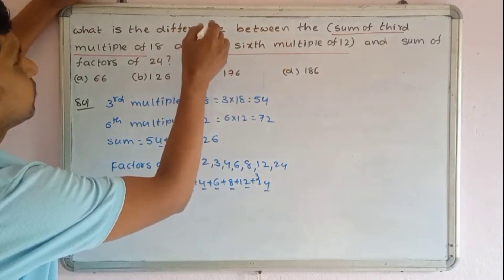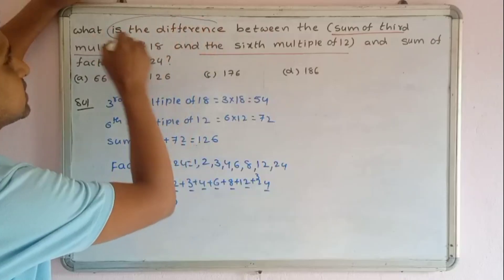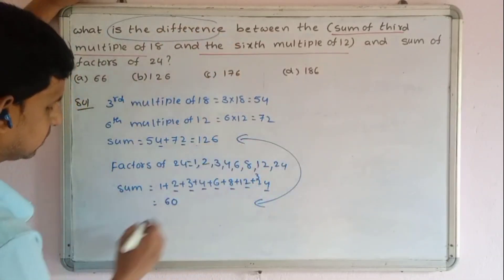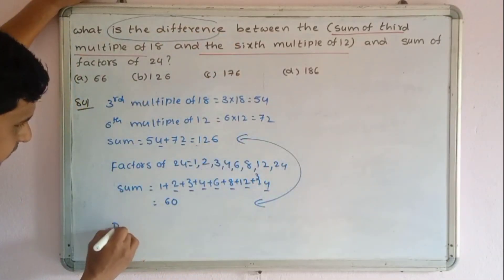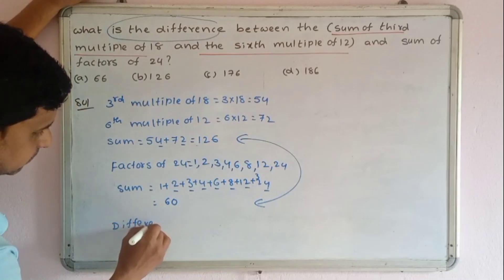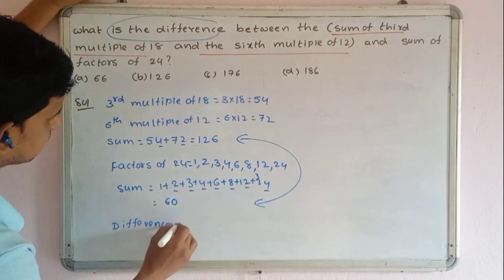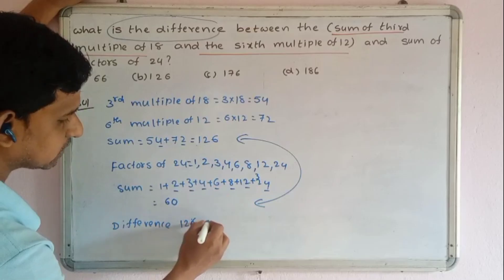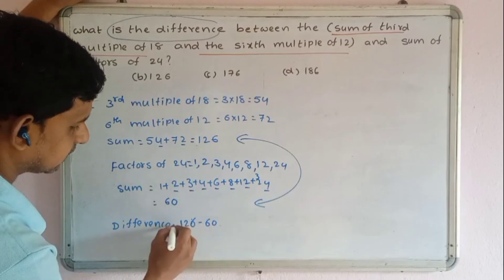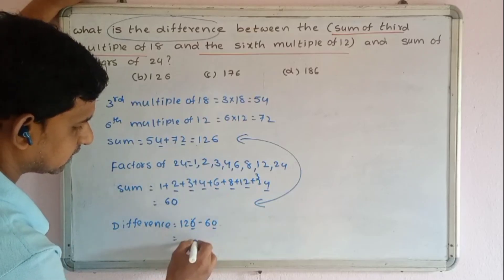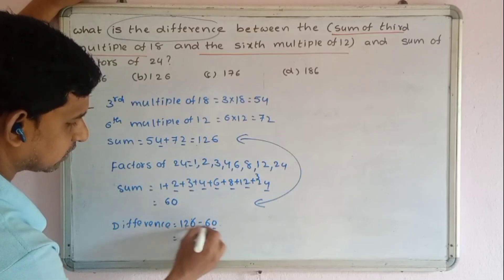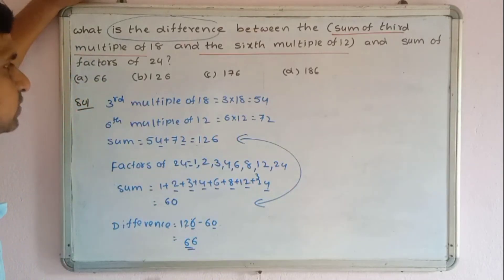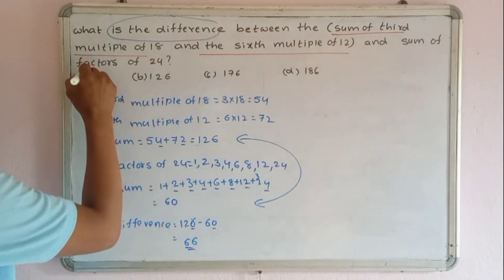Now find the difference: 126 minus 60 equals 66. So the difference equals 66. The correct answer is option A.